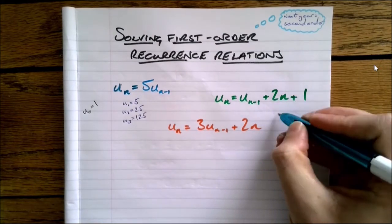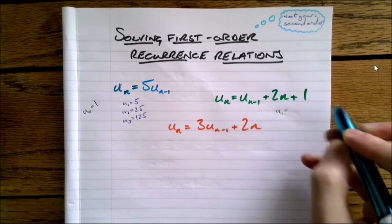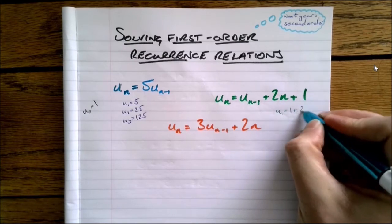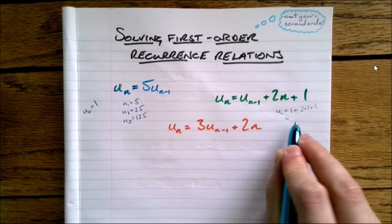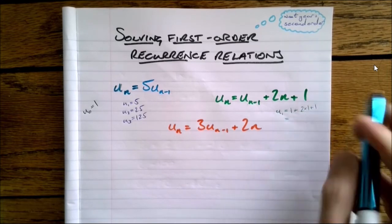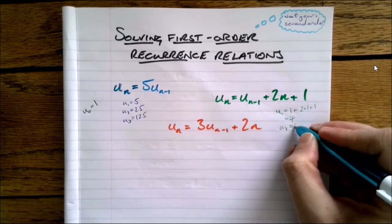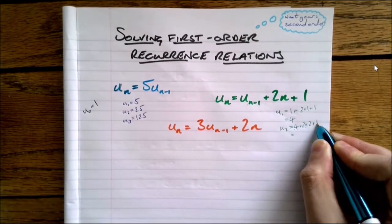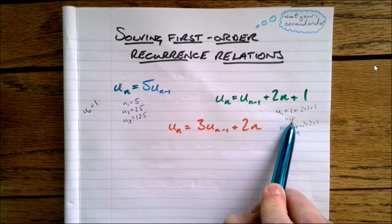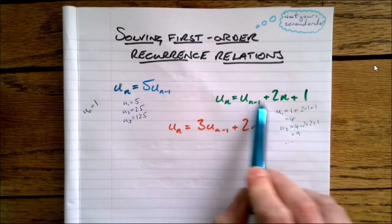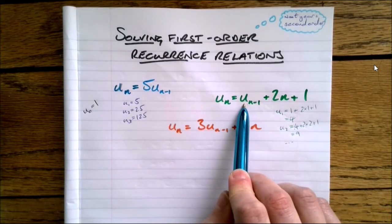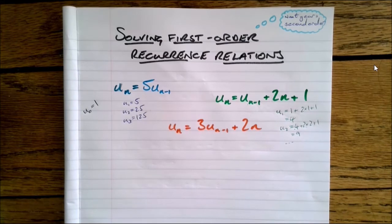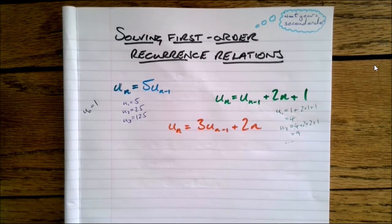This next one: if U0 is 1, then U1 is going to be the term before it plus 2 lots of 1 plus 1. The sequence generates values 4, 8, 9... and so on. So it's taking the one before and adding on this thing, but it's not multiplying the previous term at all. The third one is multiplying the previous term and also adding something on.